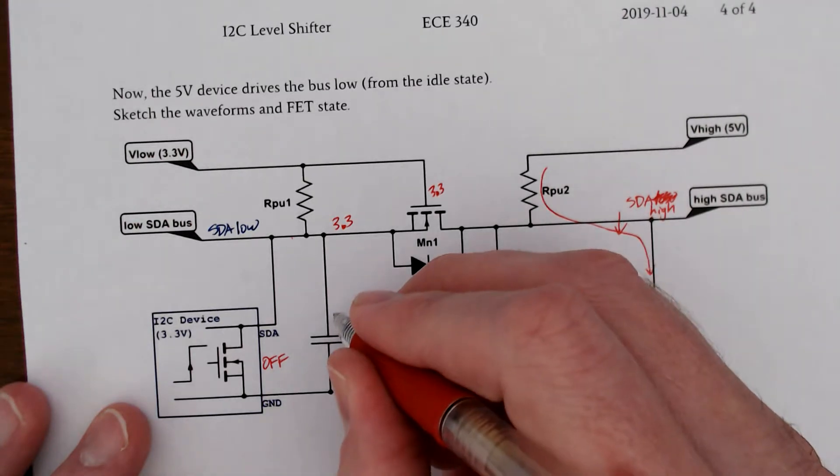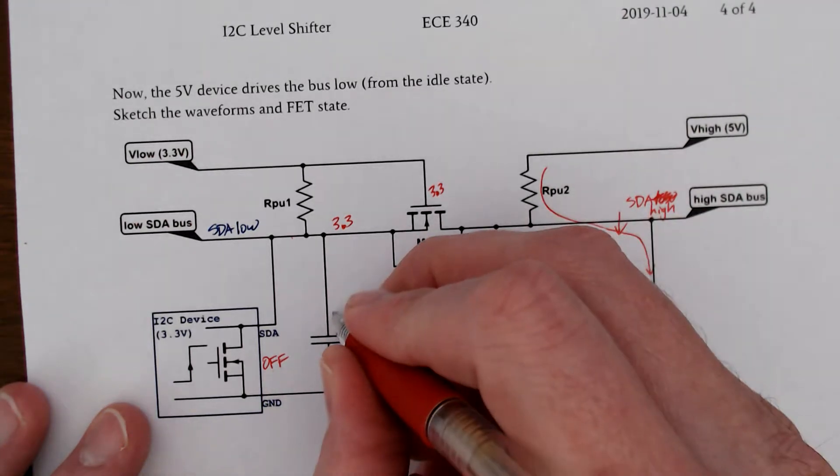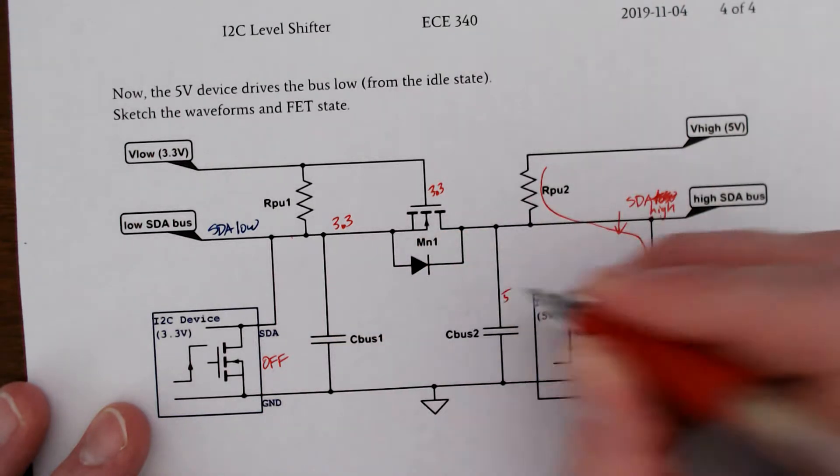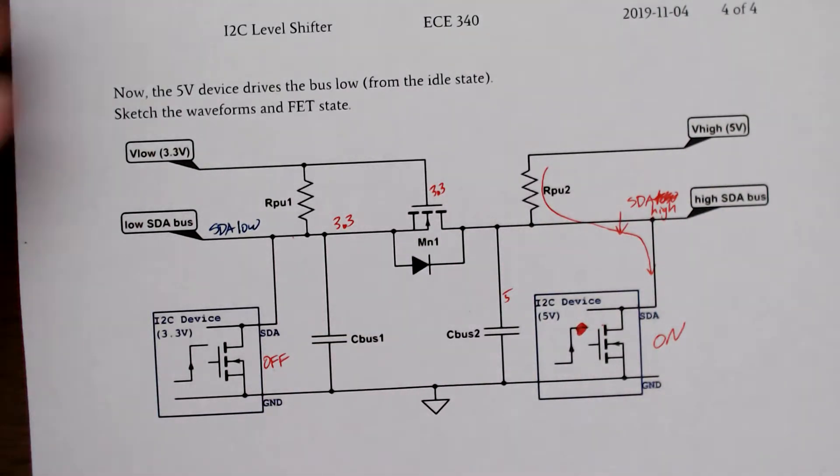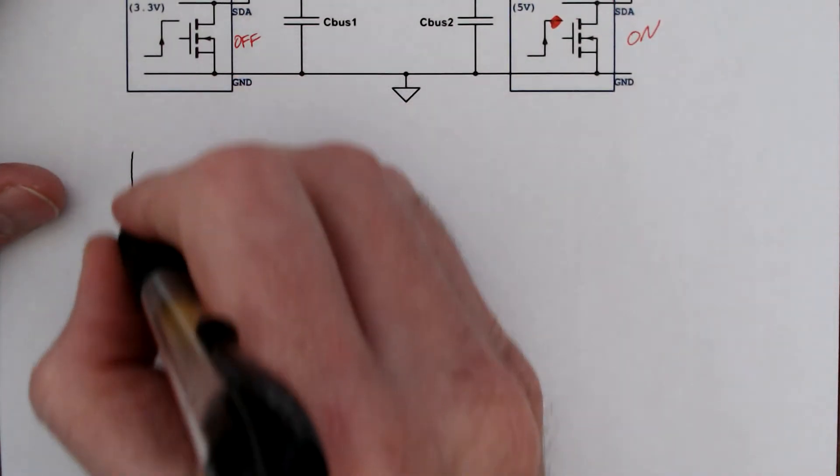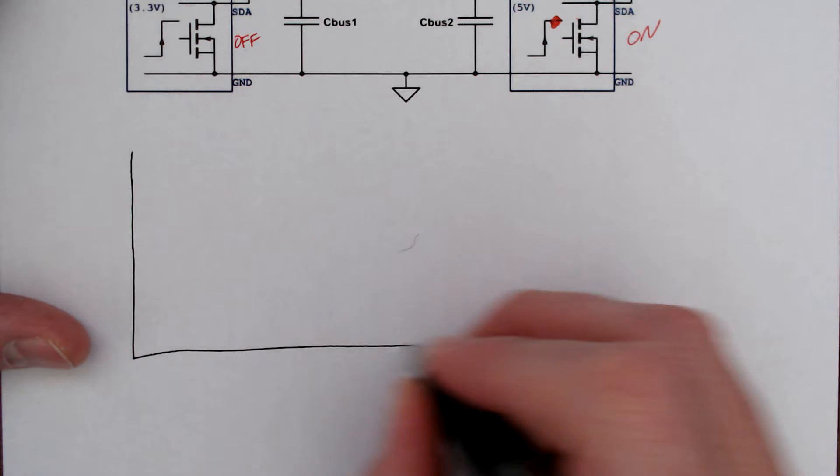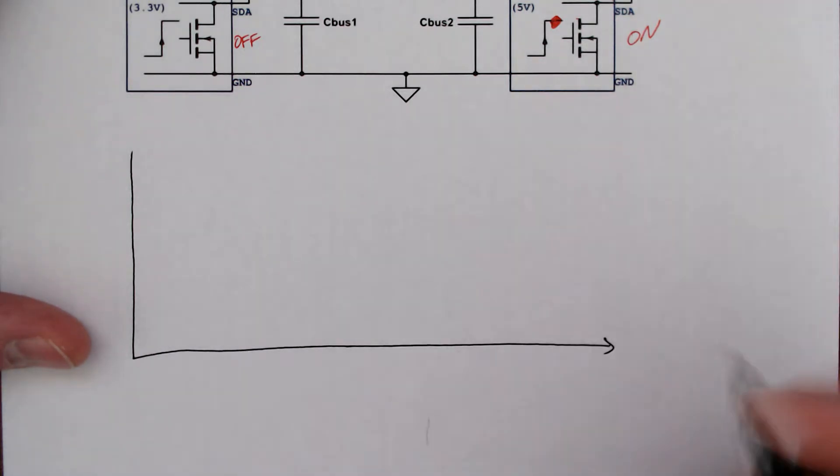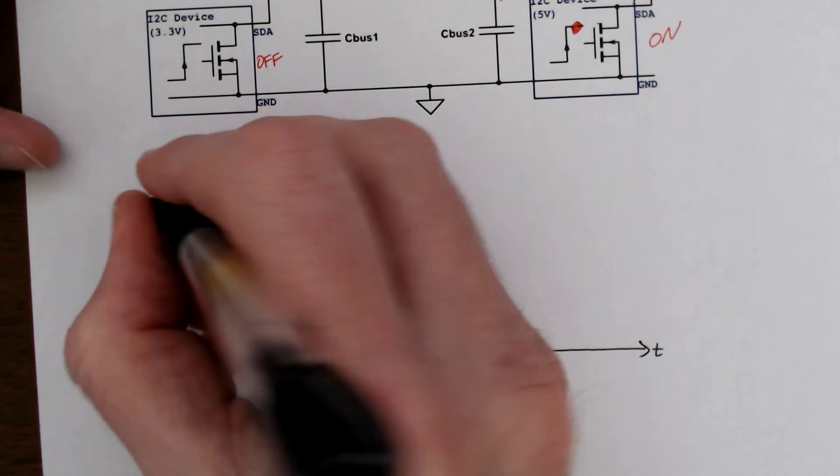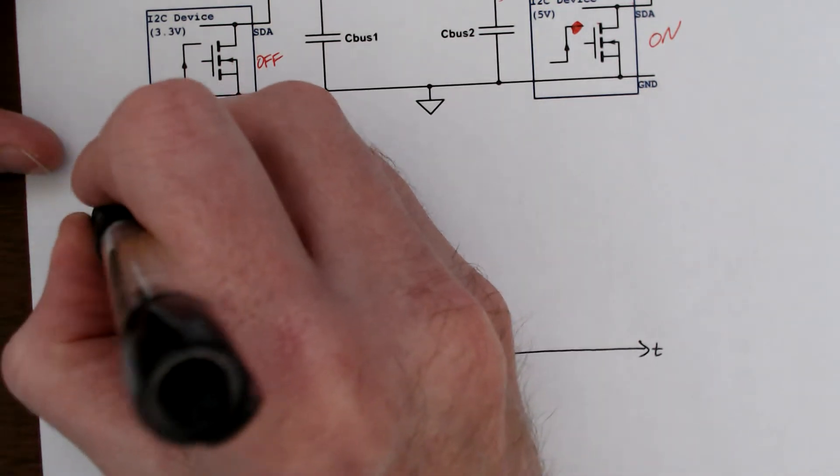Our initial condition, remember, for this capacitor was 3.3. This one started at 5. And this is where we need to start to also draw some waveforms. All right, so you can watch me draw waveforms in real time. Here's time.